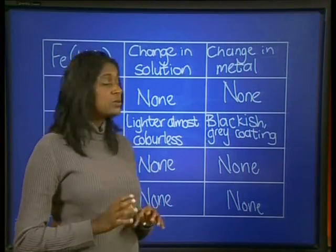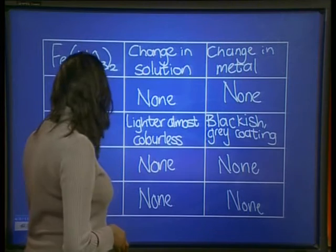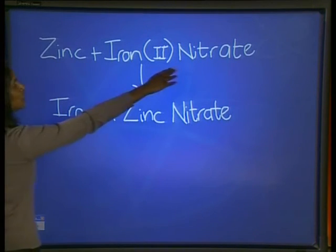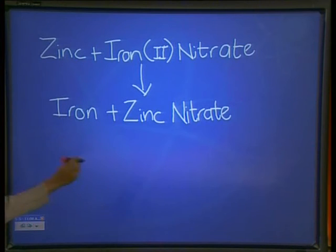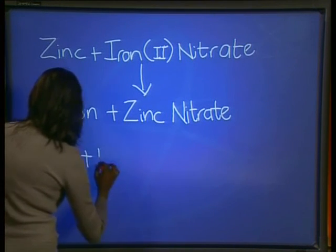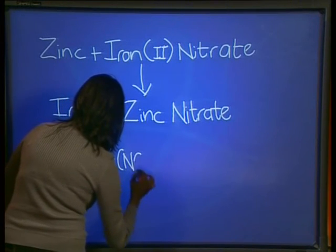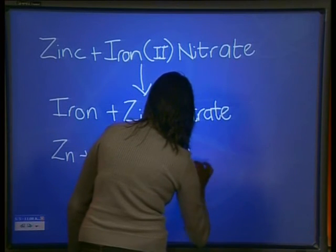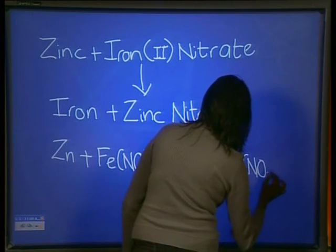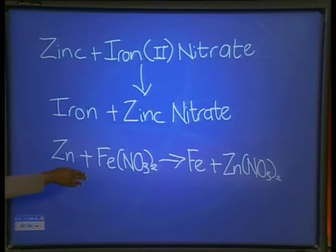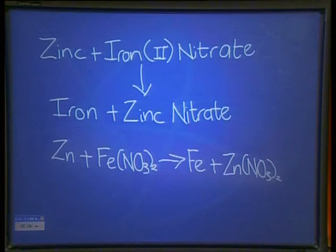Let's look at the equation of the reaction between zinc and iron 2 nitrate. Our word equation is: zinc plus iron 2 nitrate react to form iron and zinc nitrate. Our chemical equation for this reaction is: zinc plus iron 2 nitrate react to form iron and zinc nitrate. Our equation is balanced because we have the same number of atoms per element on the left of the equation as we do on the right. Writing balanced chemical equations is a very important skill for you to master, so make sure that you practice all the equations we write throughout this series.